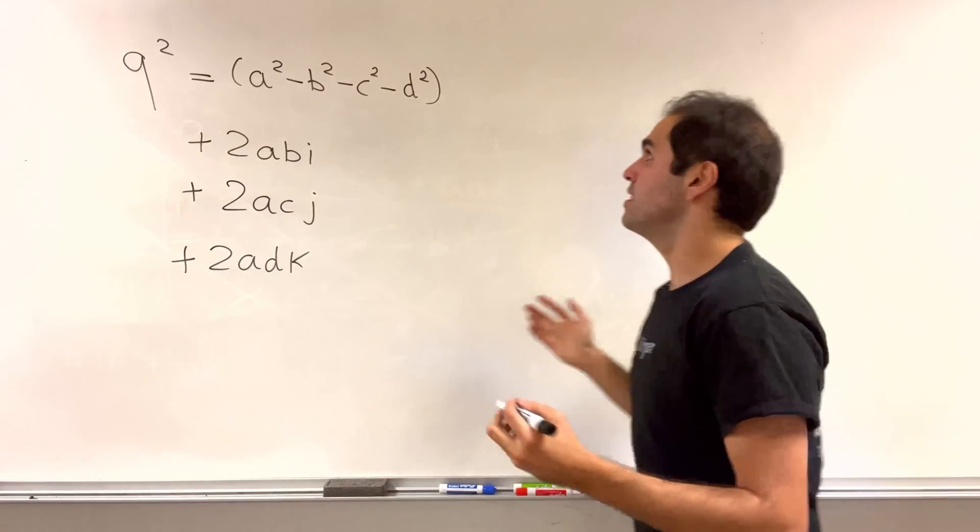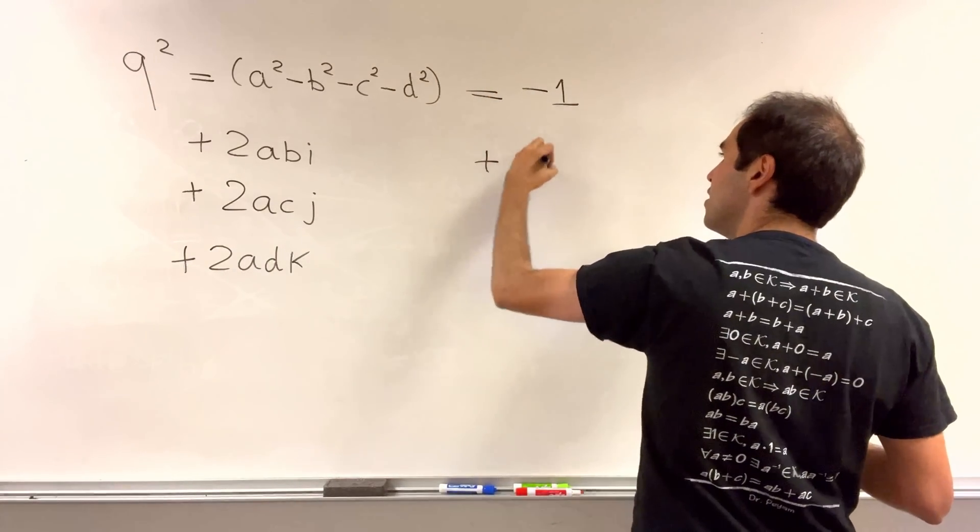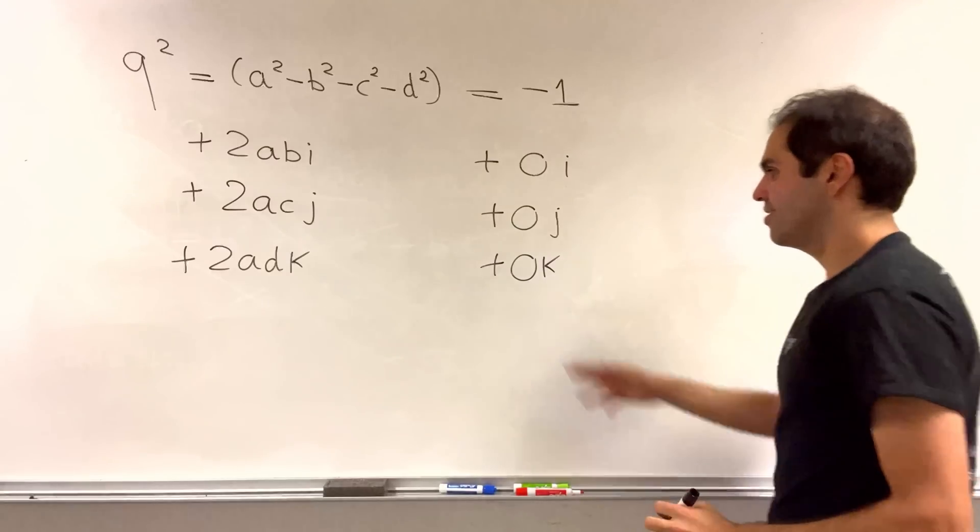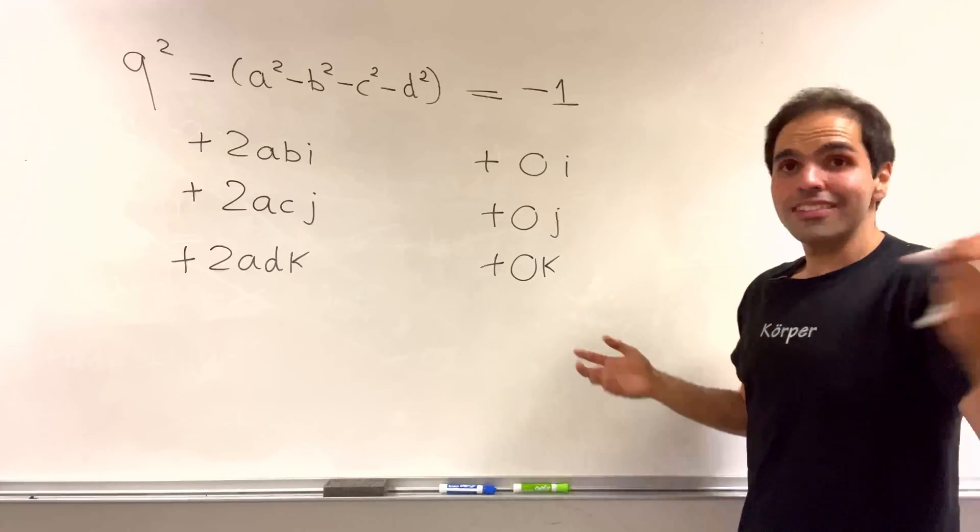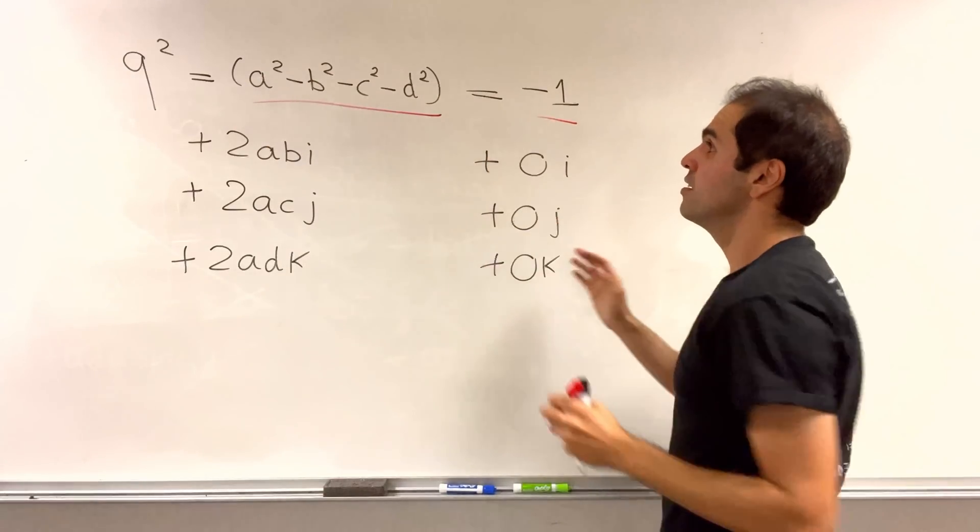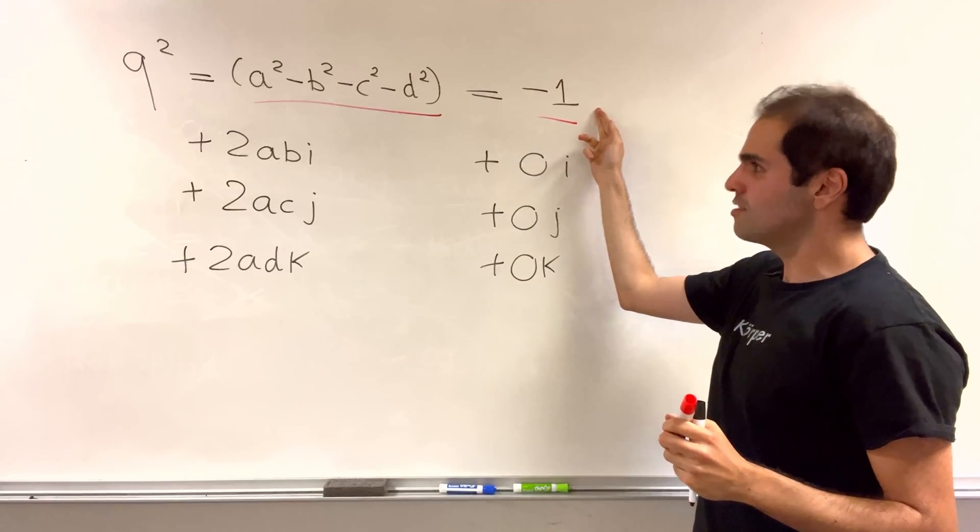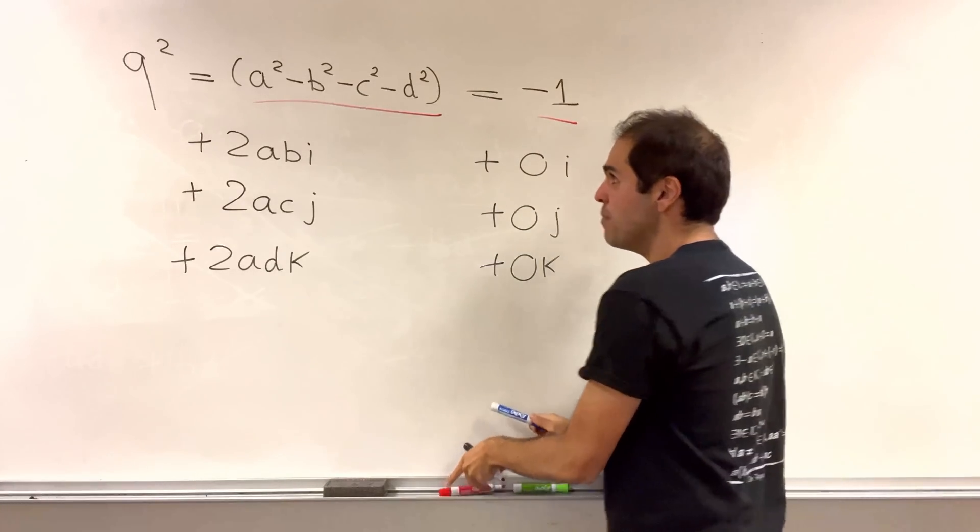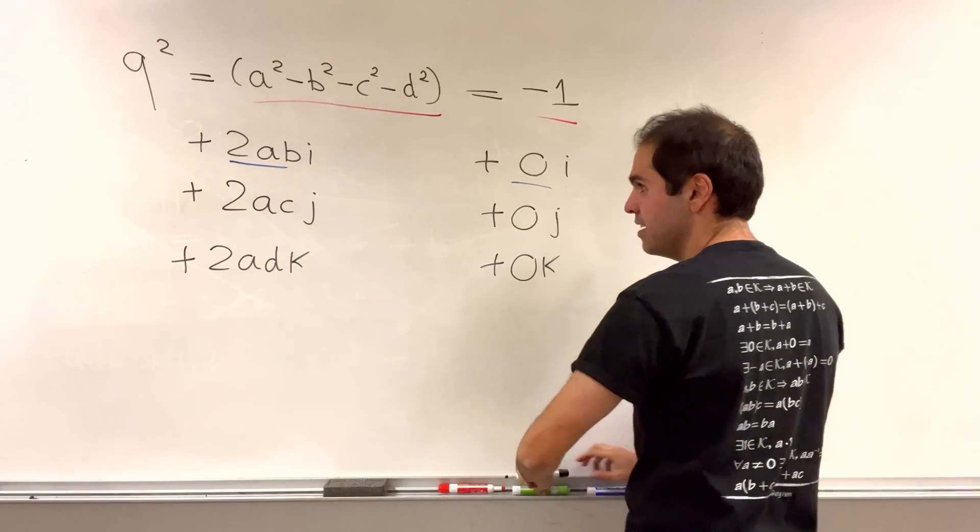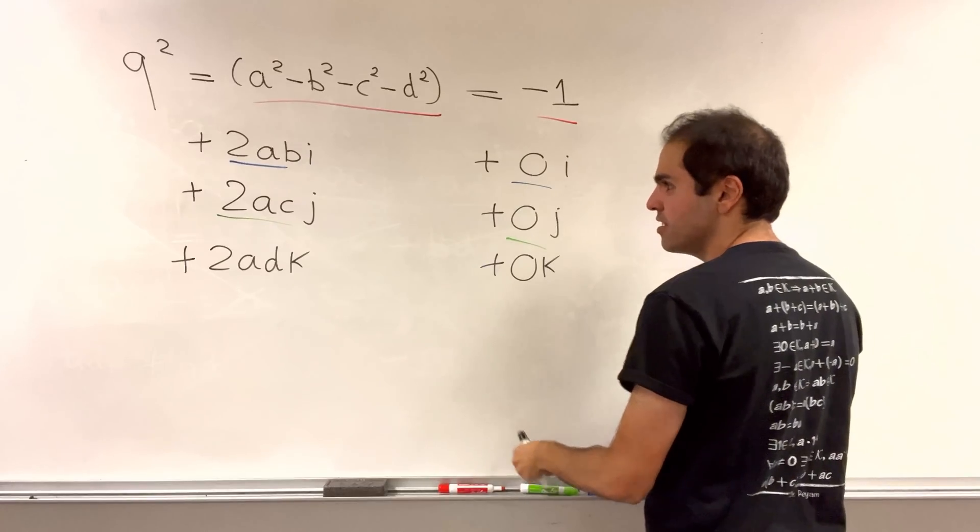And what we want to do, we want to set this equal to minus one, which is minus one plus zero i plus zero j plus zero k. And all we need to do is to compare the terms. So a squared minus b squared minus c squared minus d squared is minus one. ab is zero. ac is zero. And ad is zero.